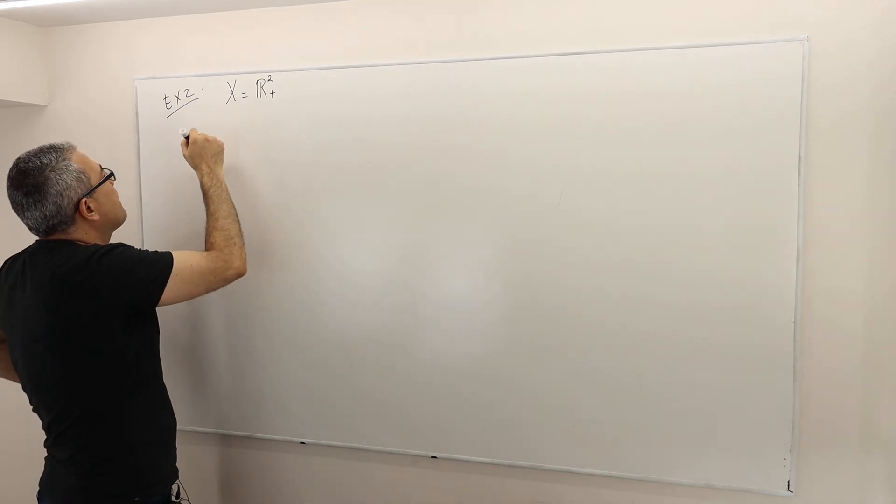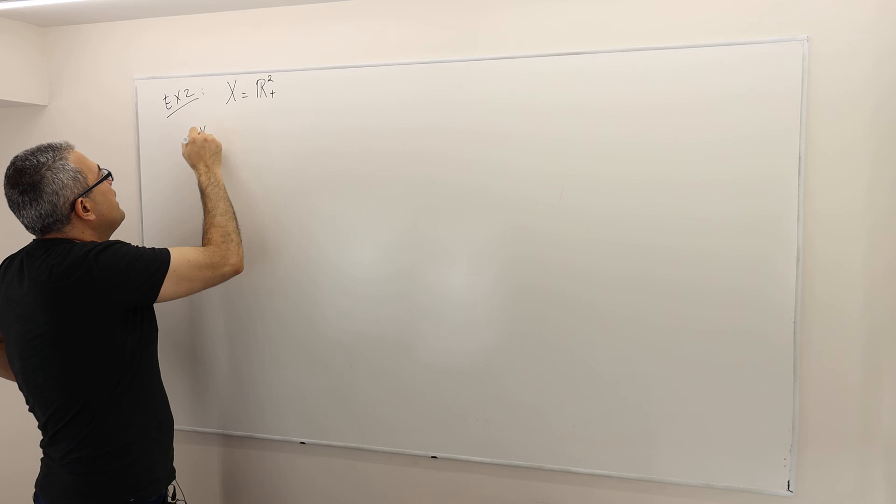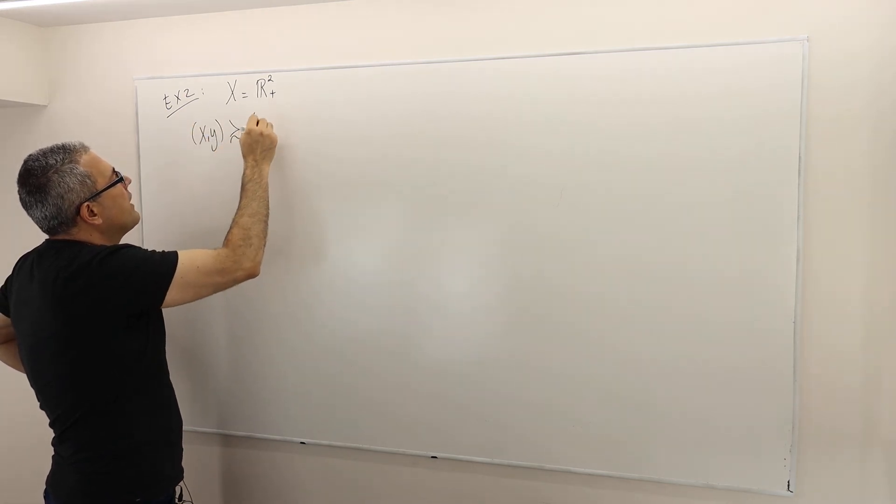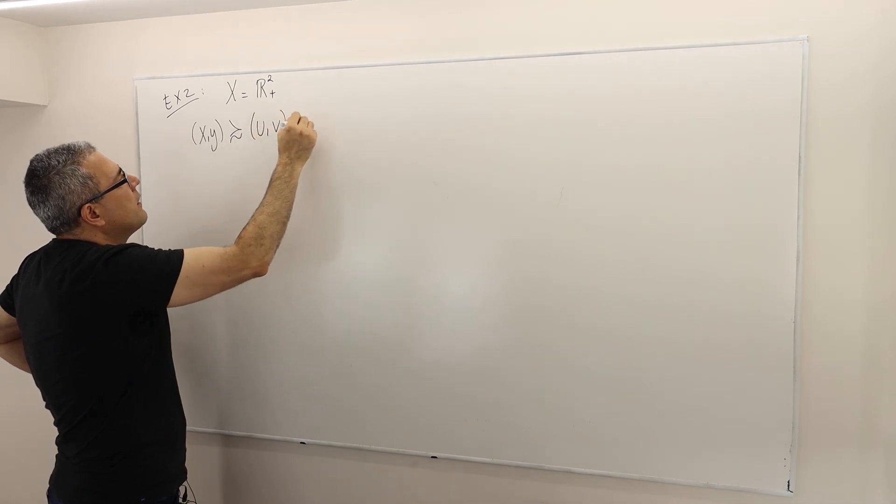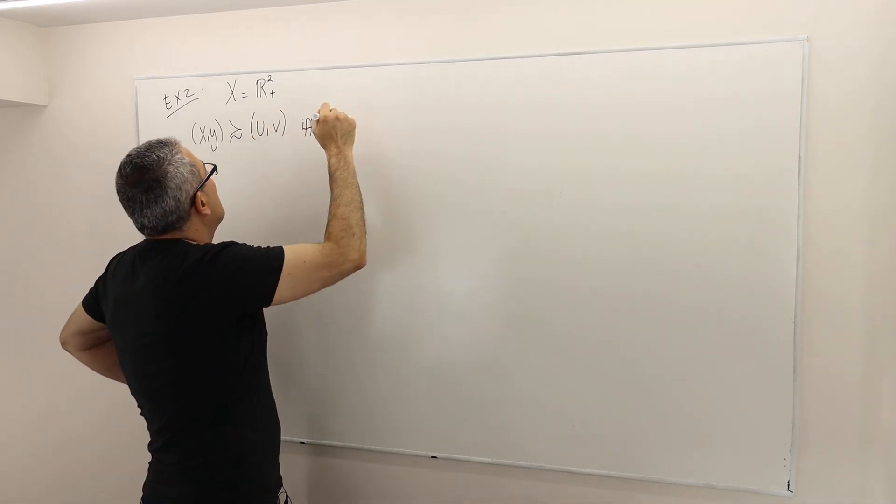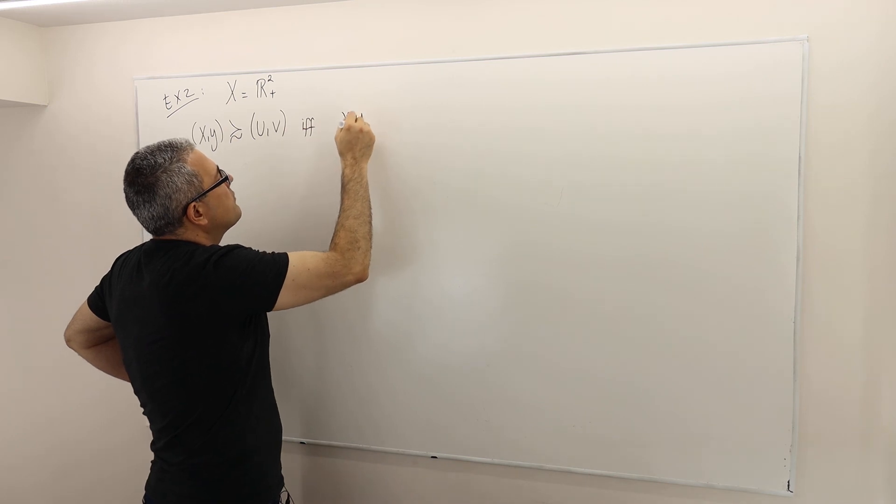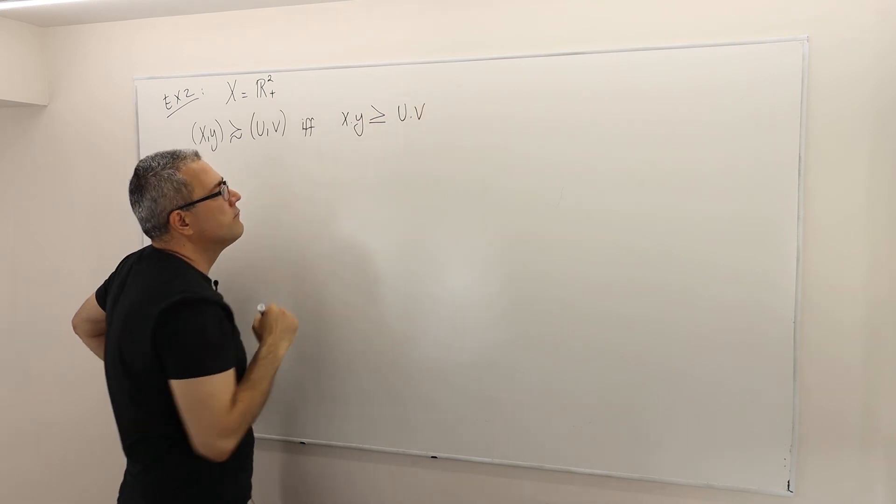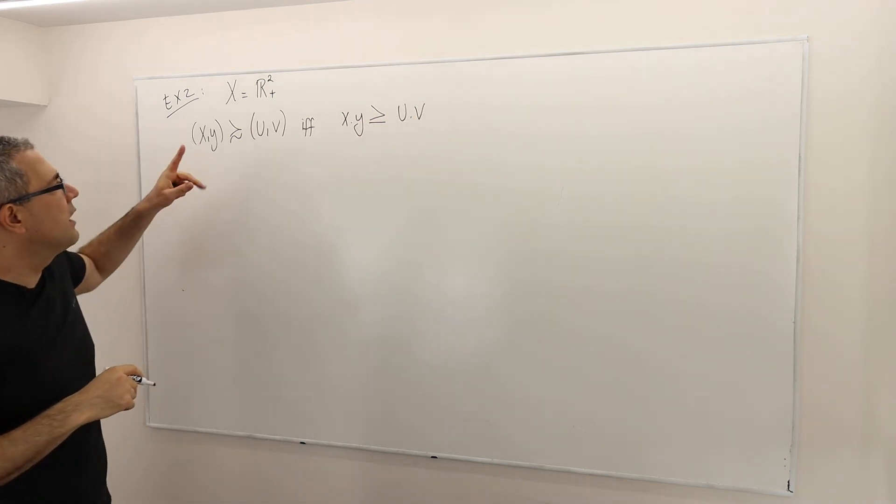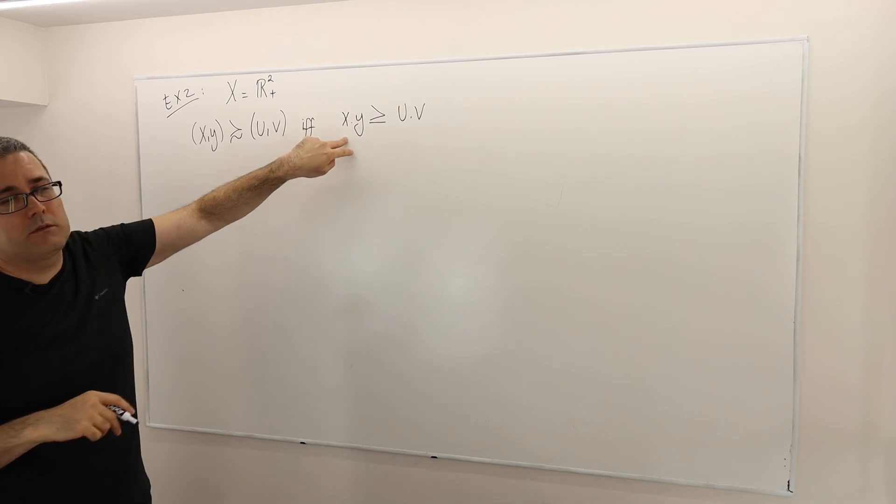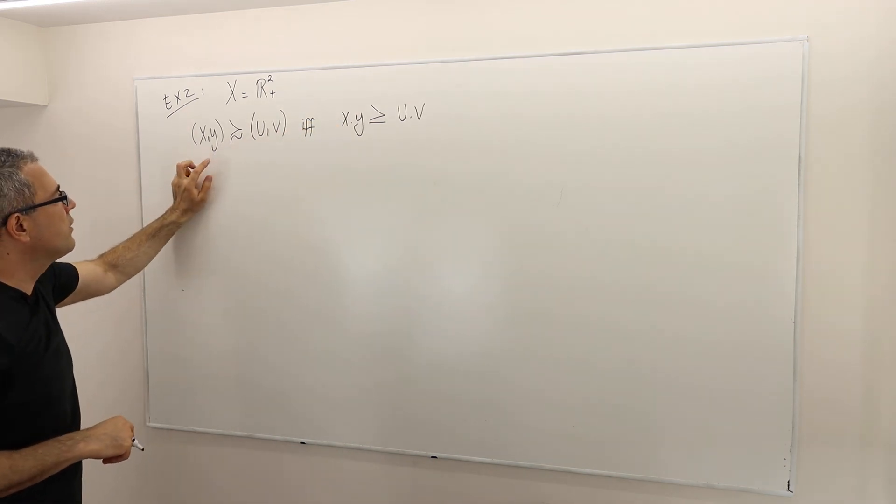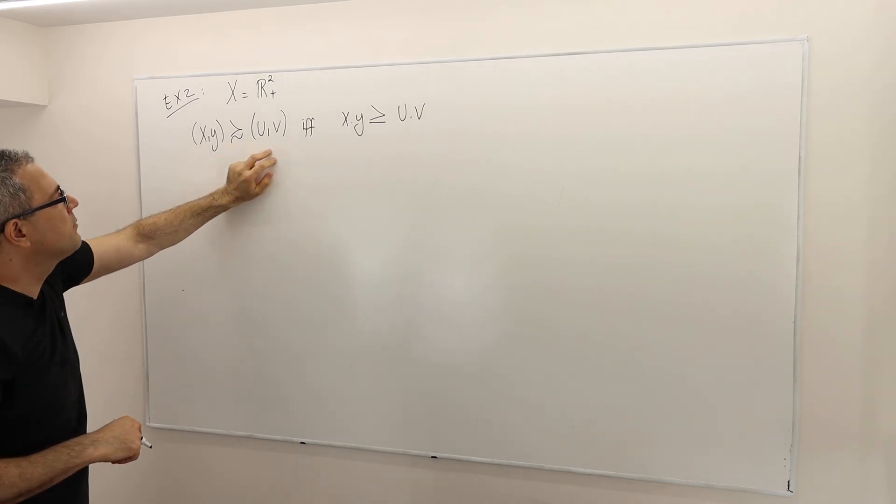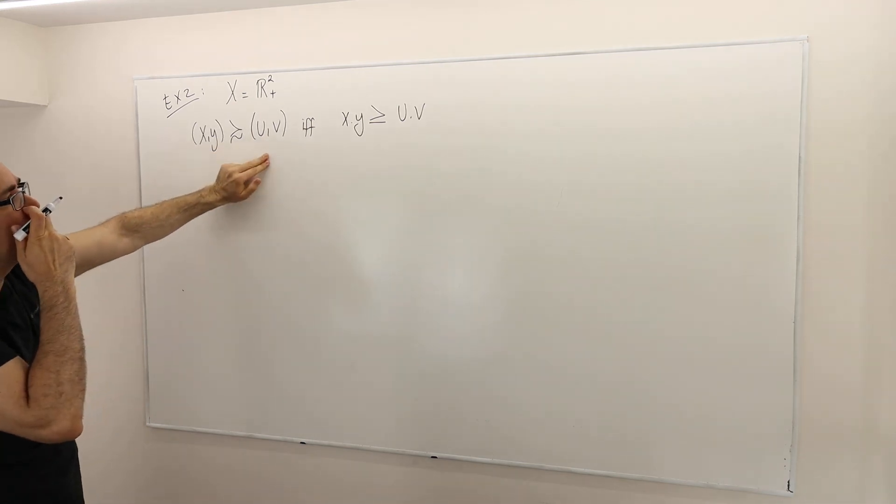So for any bundle (x,y), I'm going to call it at least as good as another bundle (u,v) if and only if x times y is greater than or equal to u times v. I multiply two numbers. I look at this vector, I multiply them. I look at this vector, I multiply them. If the multiplication of this vector is greater than or equal to the multiplication of u and v,